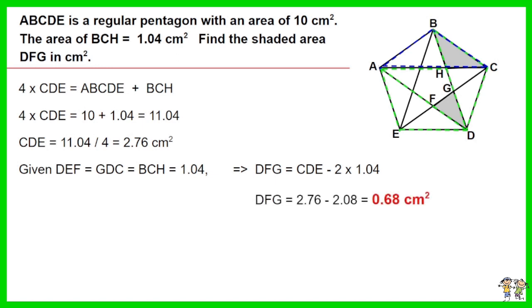Work out the equation. The area of DFG is 0.68 cm².